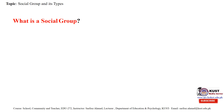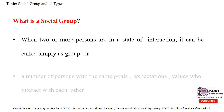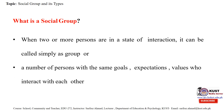Renowned social psychologist Muzaffar Sharif formulated a technical definition of a social group. We can also define it as: when two or more persons are in a state of interaction, it can be called simply as a group. Or, a number of persons with the same goals, expectations, and values who interact with each other is called a social group.